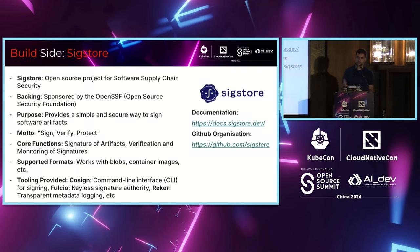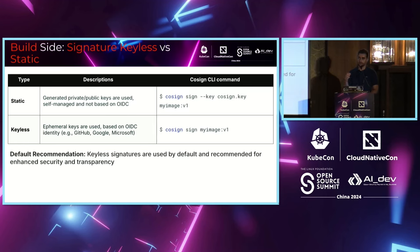With Sigstore it's possible to sign almost every kind of software artifact — blobs, container images, etc. The Sigstore project includes multiple tools: Cosign, the CLI for signing and verification; Fulcio, for keyless signature authority; and Rekor, a transparent metadata logging tool for verifying signature activity. Sigstore supports two kinds of signatures: static mode, where you generate a private/public key pair and sign with the private key — simple but basic — and keyless mode, where signing is based on OIDC identity, which is more secure.